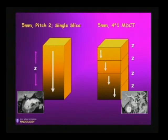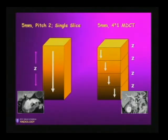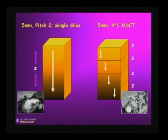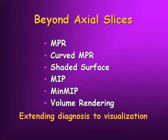If you take the same area with a single-slice scanner — here's the duodenal sweep, the pancreas, the vessels — notice how much sharper it is in the same area with a different patient utilizing multi-detector technology. It's specifically because this image, at the same slice thickness, is composed of multiple isotropic voxels.